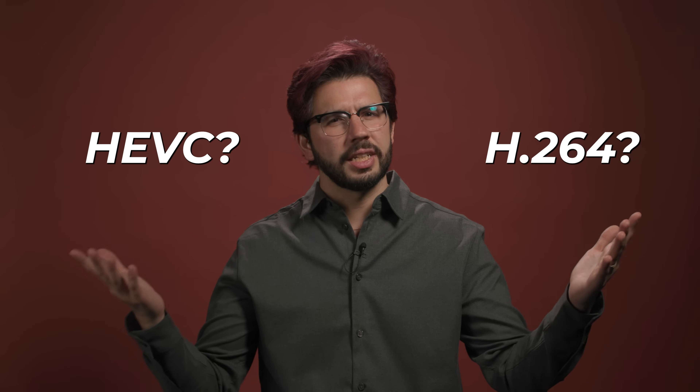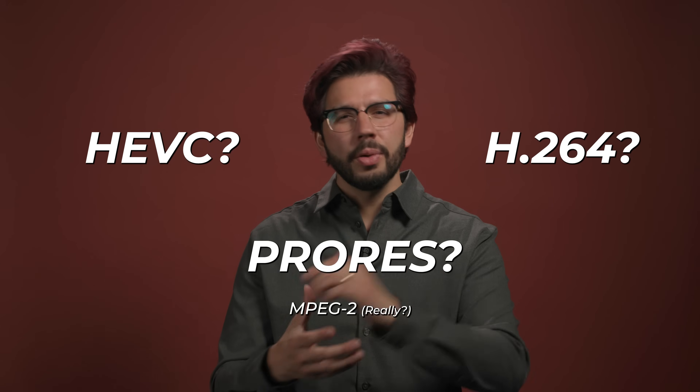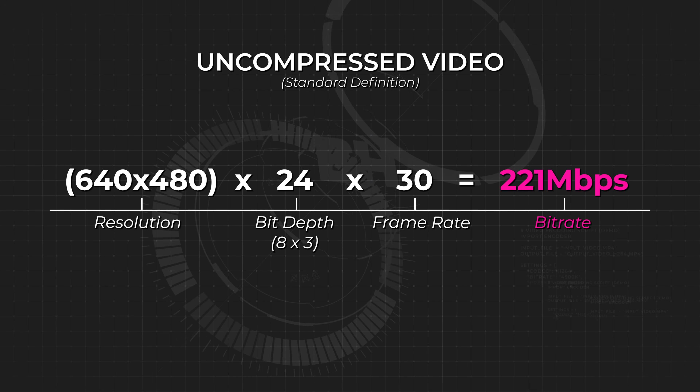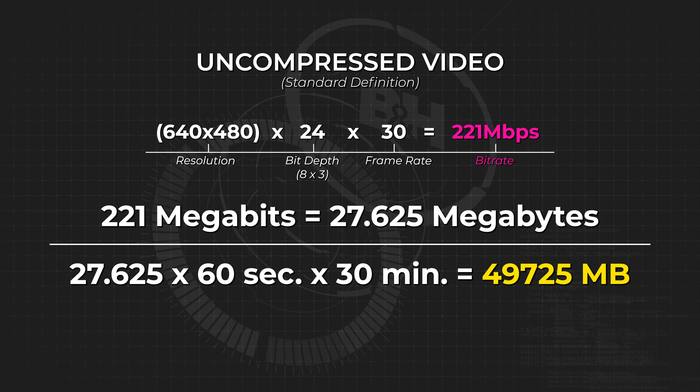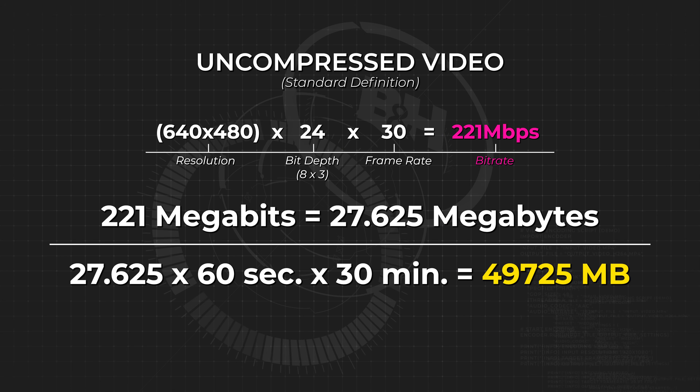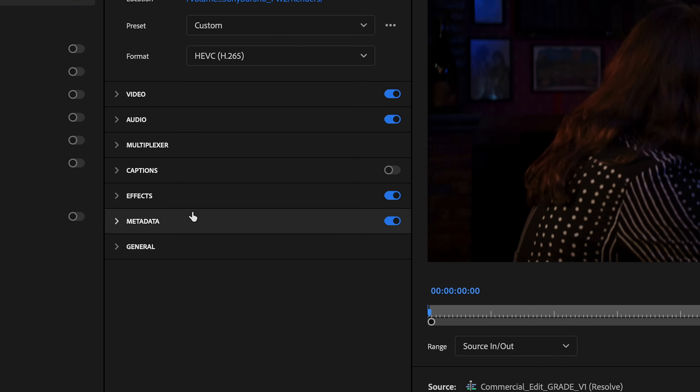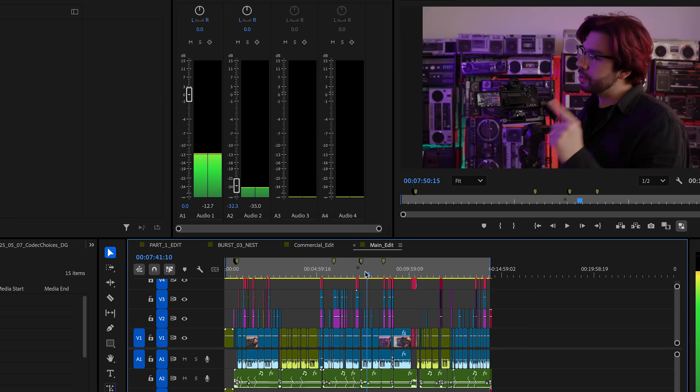But have you ever wondered why all these various codecs are even necessary — H.264, HEVC, ProRes, older options like MPEG-2? There are lots of reasons, but there's really one main reason: file size. Video is huge. Even standard definition video, when uncompressed, requires about 221 megabits per second — a 30-minute video would be nearly 50 gigabytes. You can imagine how big that gets for HD or 4K. So how do we reduce the file size to something we can record to SD media, edit quickly, upload online, and stream instantaneously?